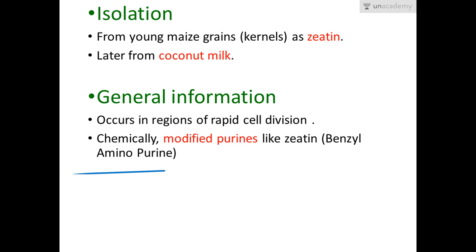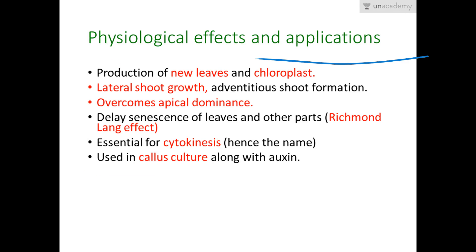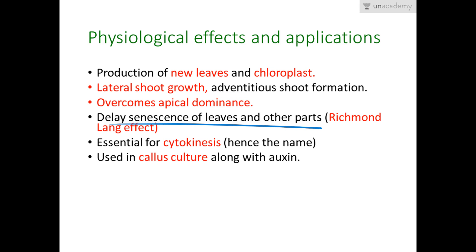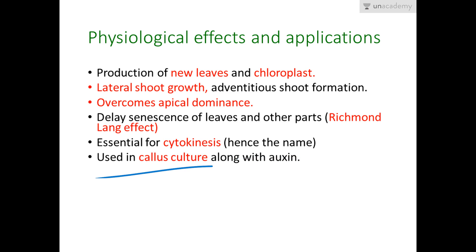The physiological effects of cytokinins include: helping in production of new leaves and chloroplasts; promoting lateral shoot growth and adventitious shoot formation, thereby overcoming apical dominance — which is the opposite of what auxin does. Cytokinins delay senescence of leaves in detached parts, an effect known as the Richmond-Lang effect, which is very important from an examination standpoint. Cytokinins are also essential for cytokinesis — hence the name — and they are used in callus culture along with auxin, where they help in shoot elongation while auxin helps in root differentiation.